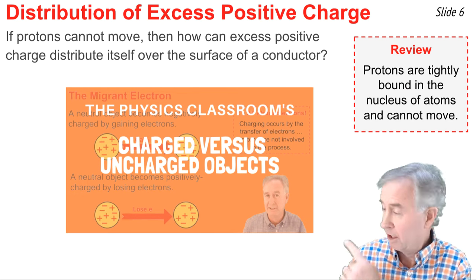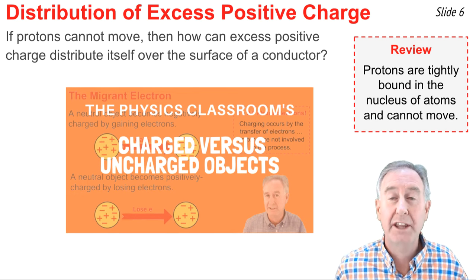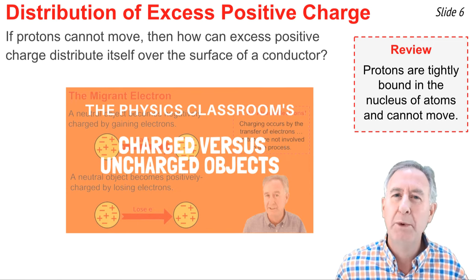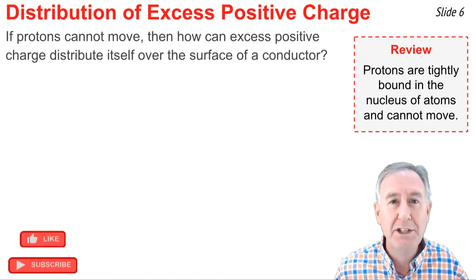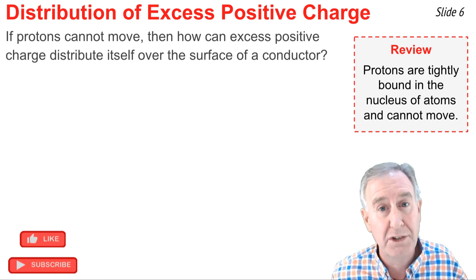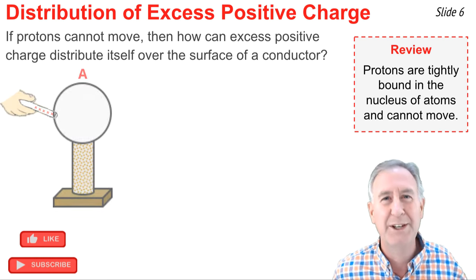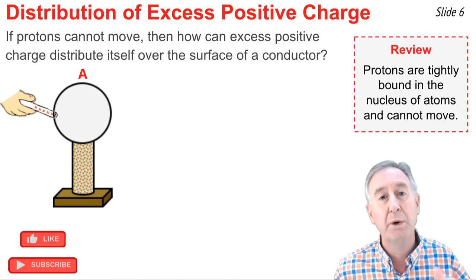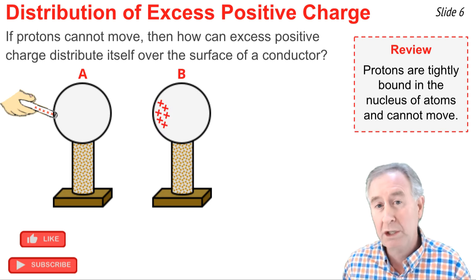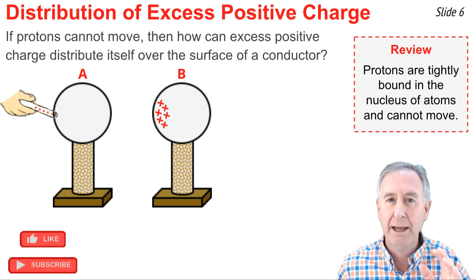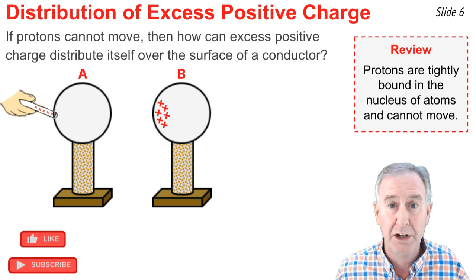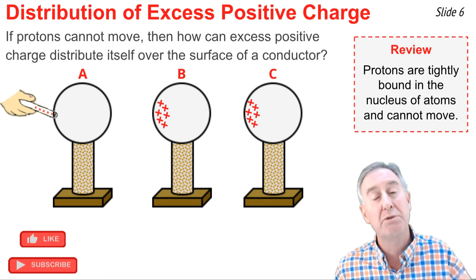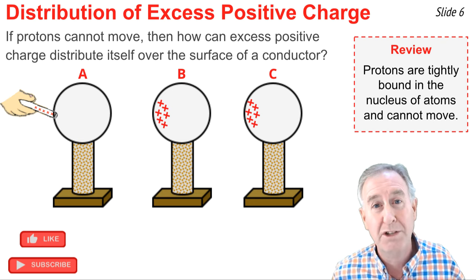In a previous video, we discussed the idea that protons are tightly bound in the nucleus of an atom and cannot move. So you might be wondering: exactly how can excess positive charge distribute itself across the surface of a conductor? Let's begin with diagram A, in which we have a neutral conducting sphere, and we touch it with a positively charged object. We see in diagram B that the sphere becomes positively charged, and because this is a conductor, we expect that excess positive charge to distribute itself uniformly across the surface of the sphere — but how, if protons can't move?